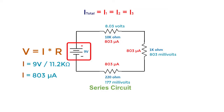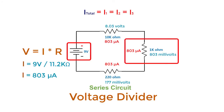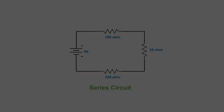That's why a series circuit is commonly known as a voltage divider circuit, as the total voltage is subdivided to the individual components in the series circuit. Now let's have an example of a parallel circuit.